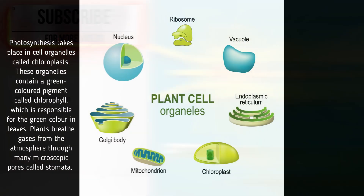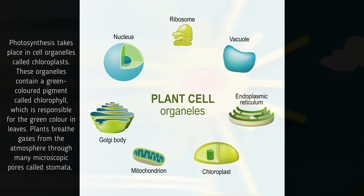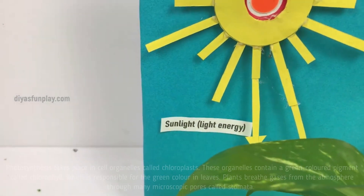Photosynthesis takes place in cell organelles called chloroplasts. These organelles contain a green-colored pigment called chlorophyll, which is responsible for the green color in leaves.